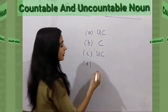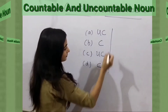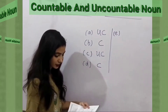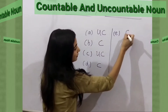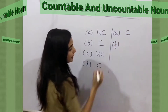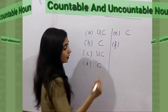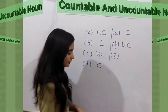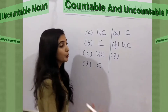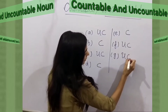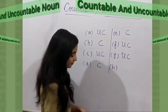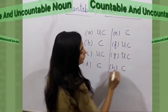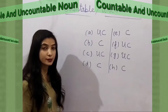What's next? Cat. Cat is countable — C. Next: Cup. Cup is countable — C. What's next? Rain. Rain is uncountable. What's next? Water. Water is uncountable. What's next? Coin. Coin is countable — one coin, two coins.